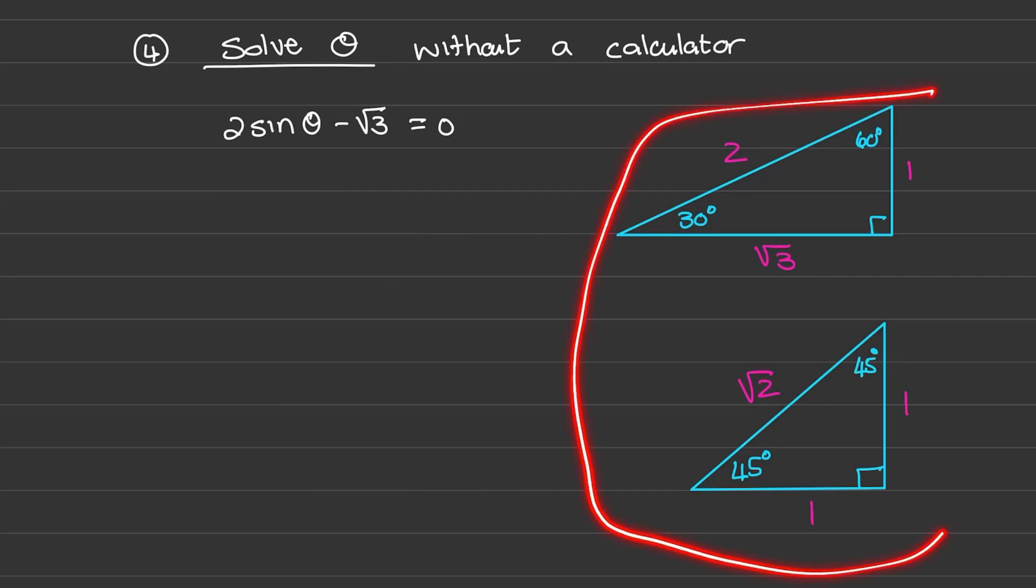We can also use special triangles to solve θ without a calculator. Let's say we have 2sinθ - √3 = 0.